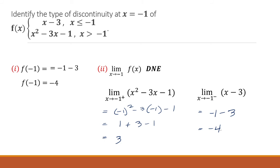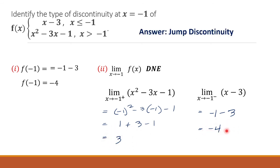Therefore, the limit at x equals negative 1 does not exist. Since we have real numbers on both sides, the left and right limits are unequal, so we have a jump discontinuity at x equals negative 1.